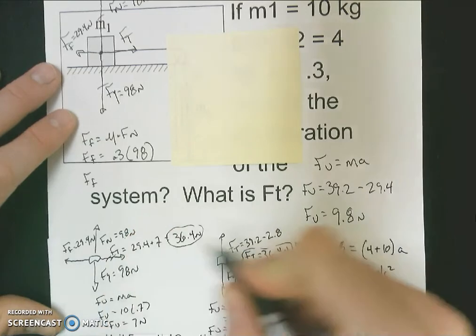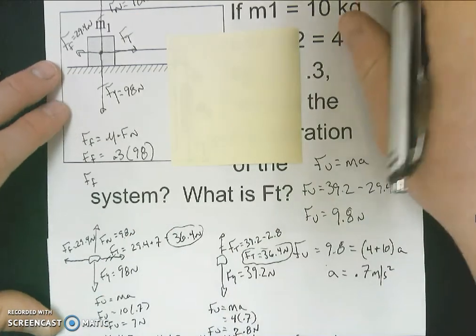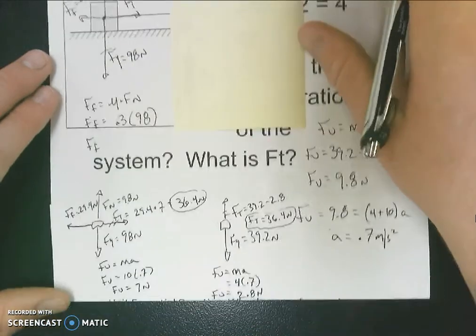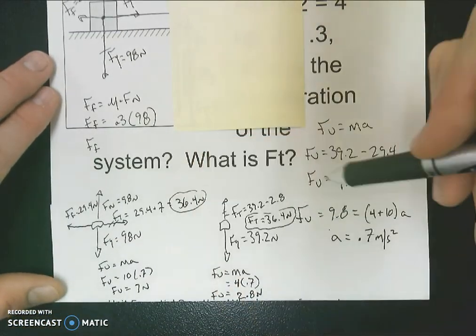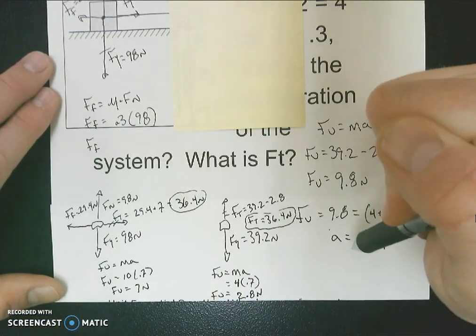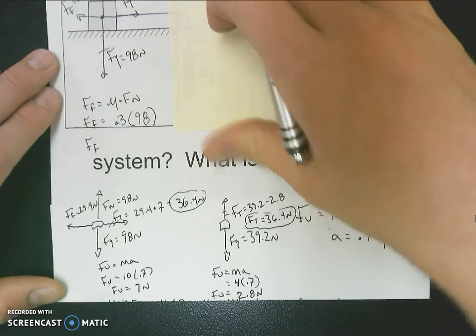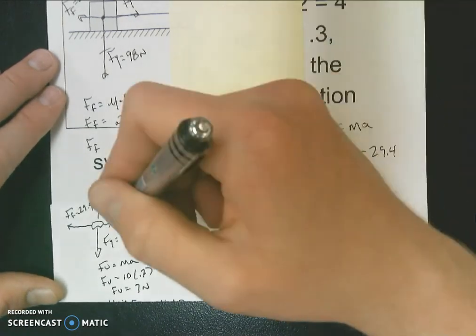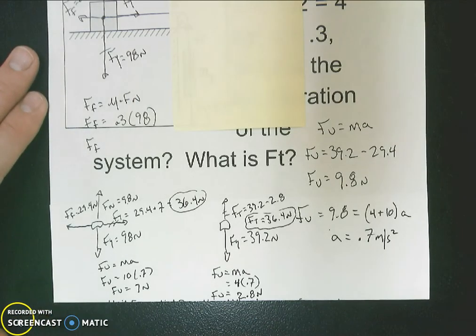We know they should be the same because it's the same string. So just wanted to give you an example of how we can solve for force of tension. We need acceleration to do so, and the trick is to just forget about one of the masses to solve the force diagram for the force of tension of the other.